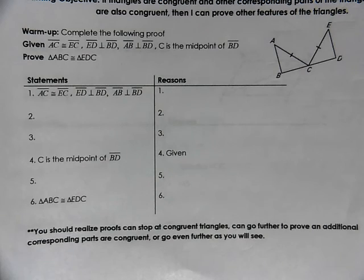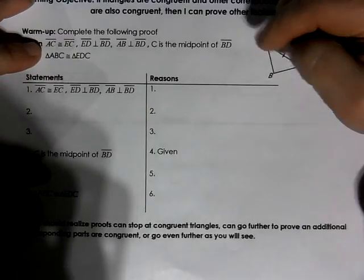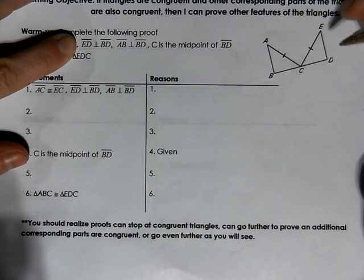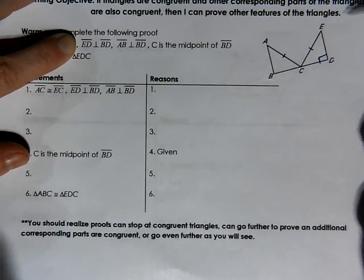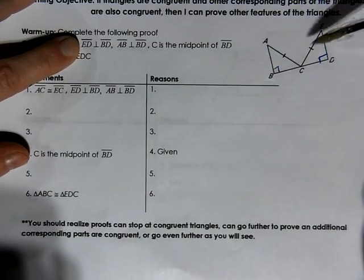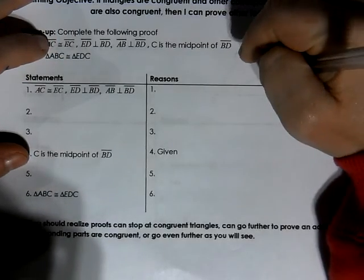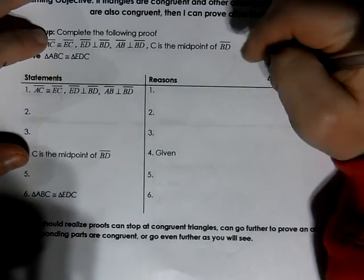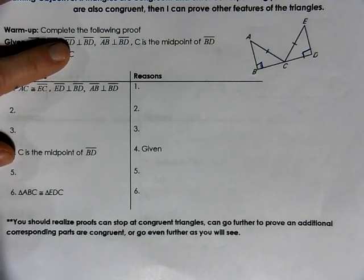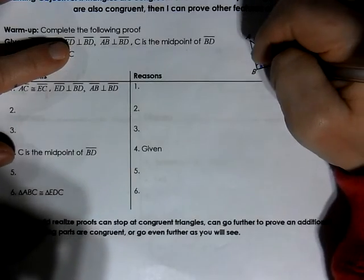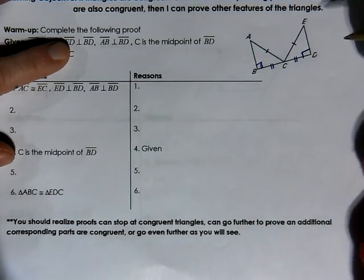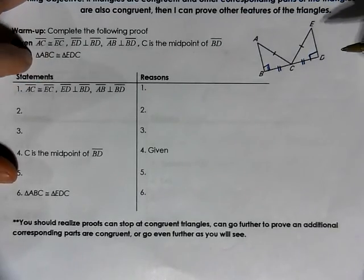All right, let's go ahead and check out how well you did. In this problem, we are given that segment AC is congruent to segment EC. We also know that segment ED is perpendicular to segment BD, and segment AB is perpendicular to segment BD. Whenever I see perpendiculars, I automatically know that perpendicular sides form right angles, so I marked up those right angles. Next, I'm told that C is the midpoint of BD, so I'm going to mark up that BC is congruent to DC.